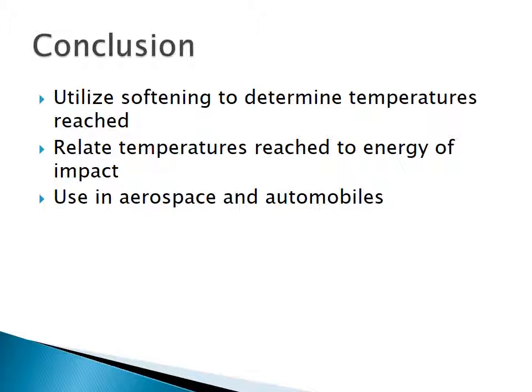In conclusion, bulk metallic glass is a material with limited information regarding high-speed fracture. Utilizing the information covered in this presentation, it is possible to relate softening of the material to temperatures reached during fracture. Temperatures reached could be related to the energy of impact and tell us more about how fracture occurred. This type of study could be helpful with other materials as well, and could be applied to high-energy mechanics such as aerospace and automobile applications.